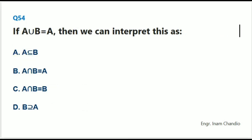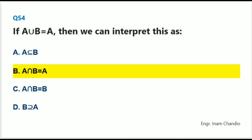If A ∪ B = A, then we can interpret this as: The correct answer is B. A ∩ B = A.